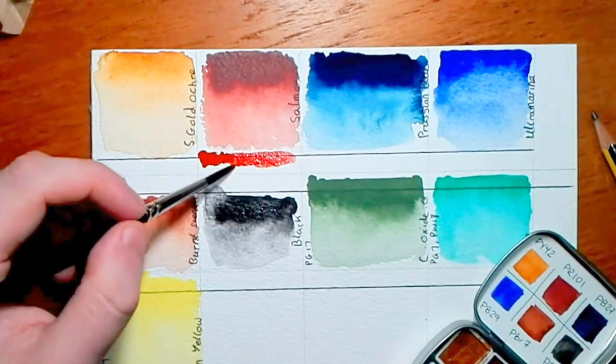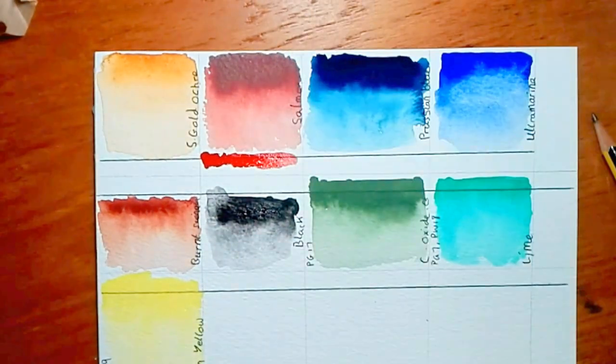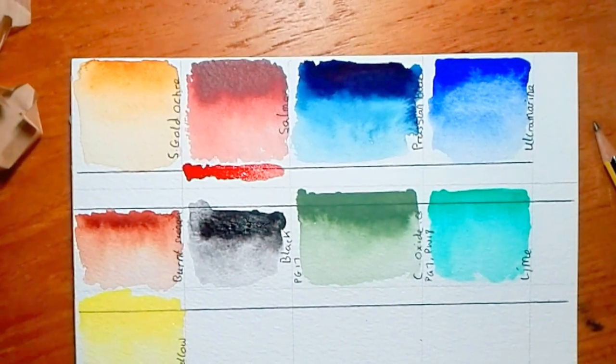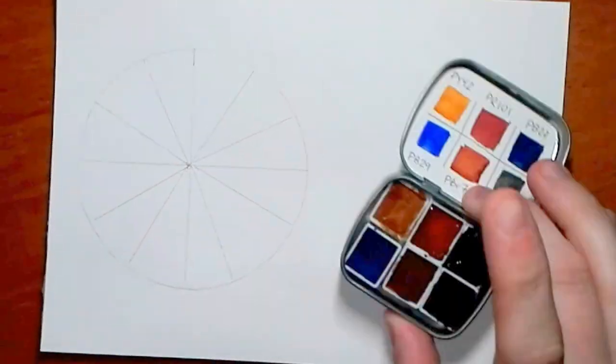I'm just sort of checking out the opaqueness of some of the colors. The salmon color and the chromium oxide color are semi-opaque.